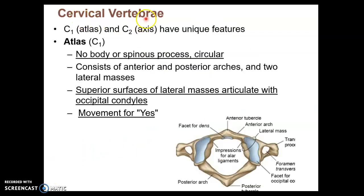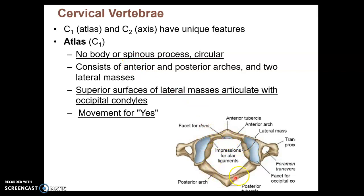Cervical vertebrae have two special cases — the top two, C1 and C2, which we refer to as atlas and axis. Atlas, C1, is special because it's the only vertebra in the entire spine that does not have a body. It's just a large foramen with no body, though of course it has transverse foramina like all cervicals.